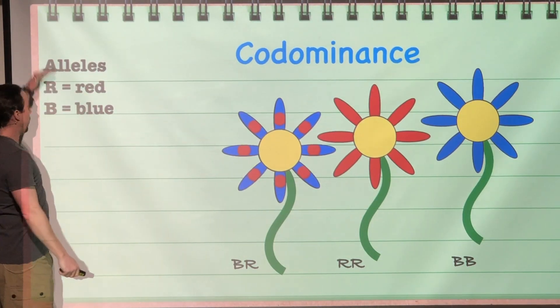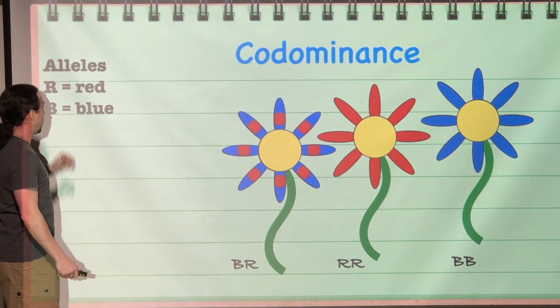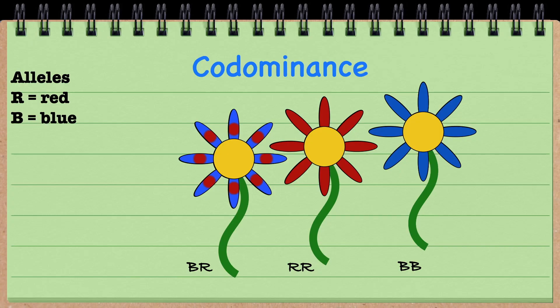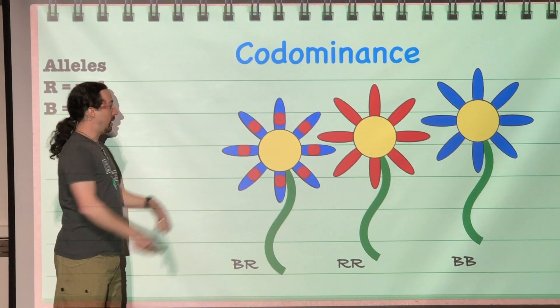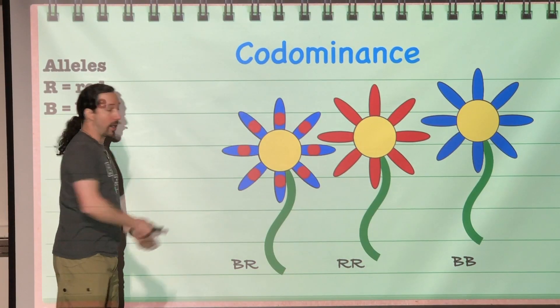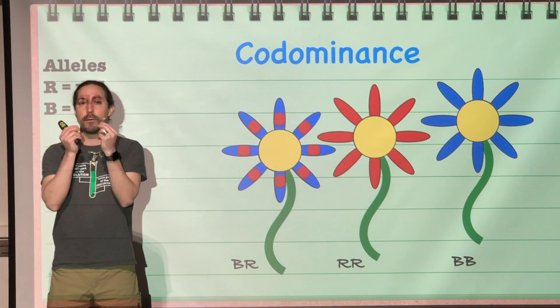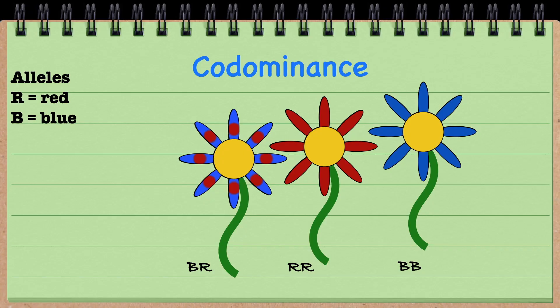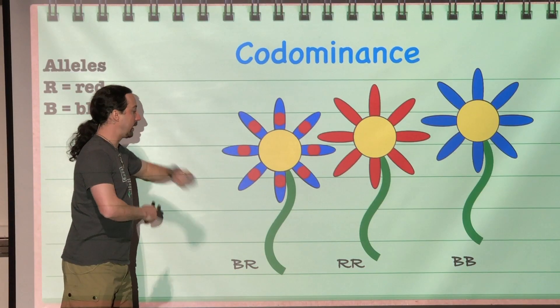So if we had a red allele and a blue allele, then the heterozygous would appear as both blue and red. The petals of our flower would show both phenotypes equally. A phenotypically red flower would have the genotype of the red alleles, and a phenotypically blue flower would have blue alleles.